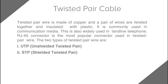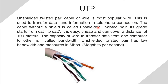UTP, also known as Unshielded Twisted Pair, is the most popular wire and is used to transfer data, information, and telephone connections. The cable without a shield is called unshielded twisted pair — it is twisted but not shielded. It ranges from Cat 1 to Cat 7 and can cover a distance of 100 meters. The capacity of a wire to transfer data from one computer to another is called bandwidth — an important term.